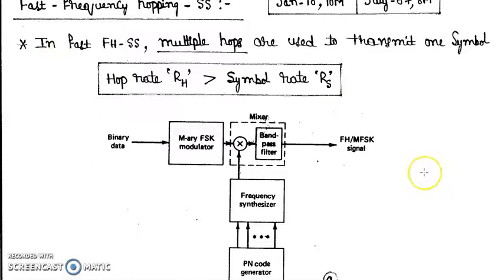So next topic is fast frequency hopping spread spectrum. In this case your hop rate RH is always greater than the symbol rate RS.